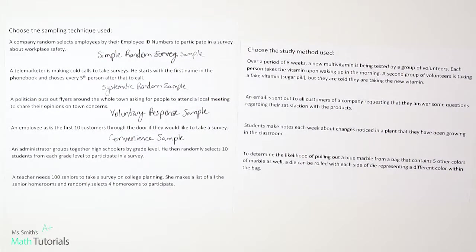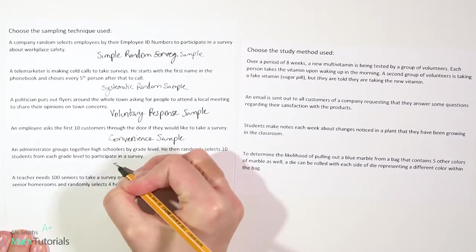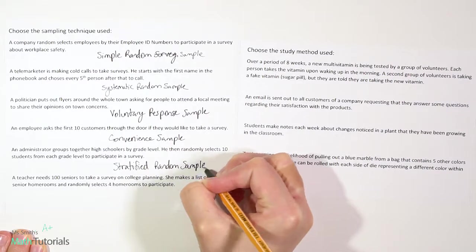An administrator groups together high schoolers by grade level and then randomly selects 10 students from each grade level to participate in the survey. Notice he's grouped them by something they have in common — in this case, grade level — and then randomly selecting 10 students from each group. So that is going to be the stratified random sample.